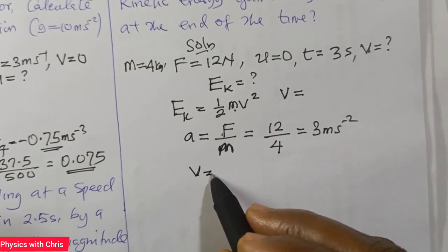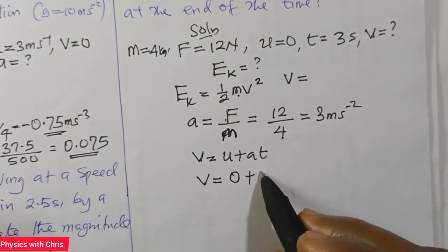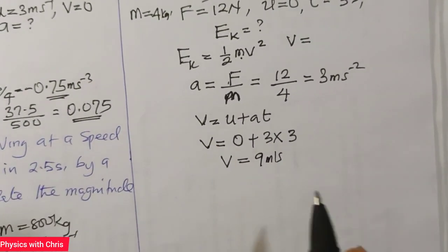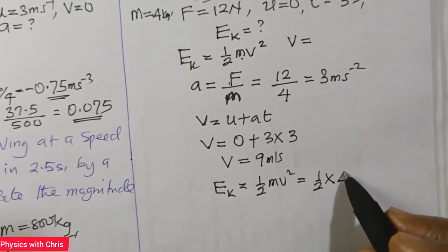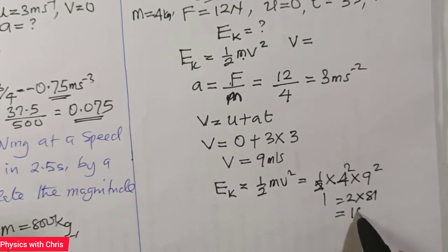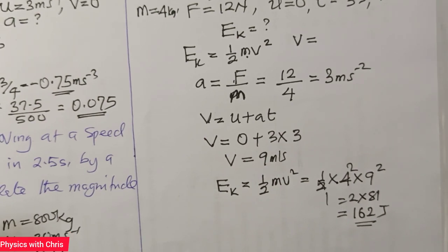From the first equation of motion, V = U + AT, I can determine the velocity of the body. Since the body starts from rest, U = 0, so V = 0 + 3 × 3 = 9 m/s. Coming back to the kinetic energy equation: EK = ½ × 4 × 9² = ½ × 4 × 81 = 2 × 81 = 162 Joules. In the next video, we'll be looking at the dynamics of motion along an inclined plane.